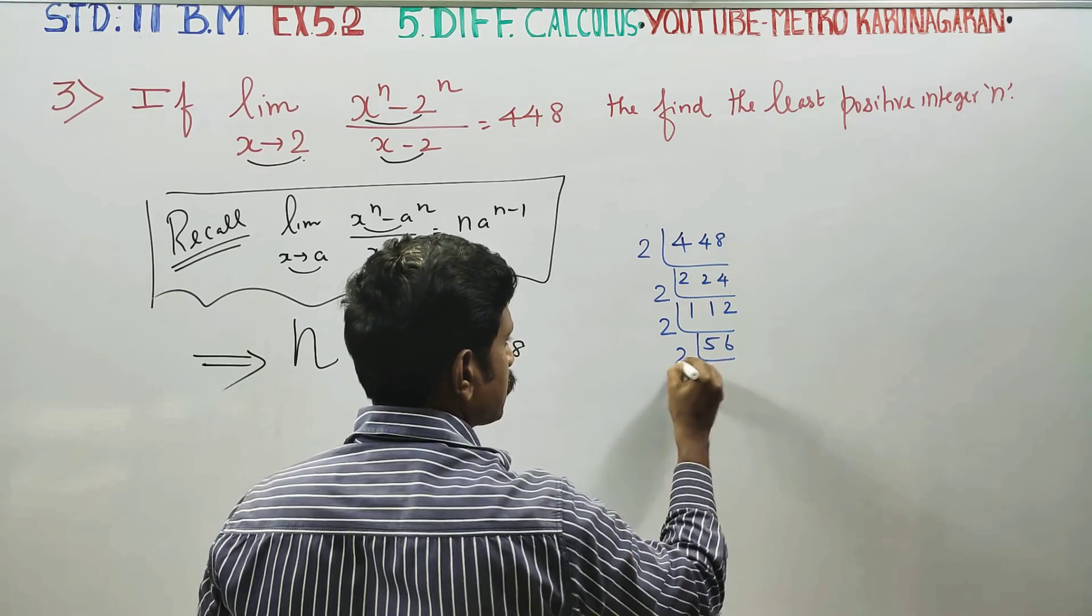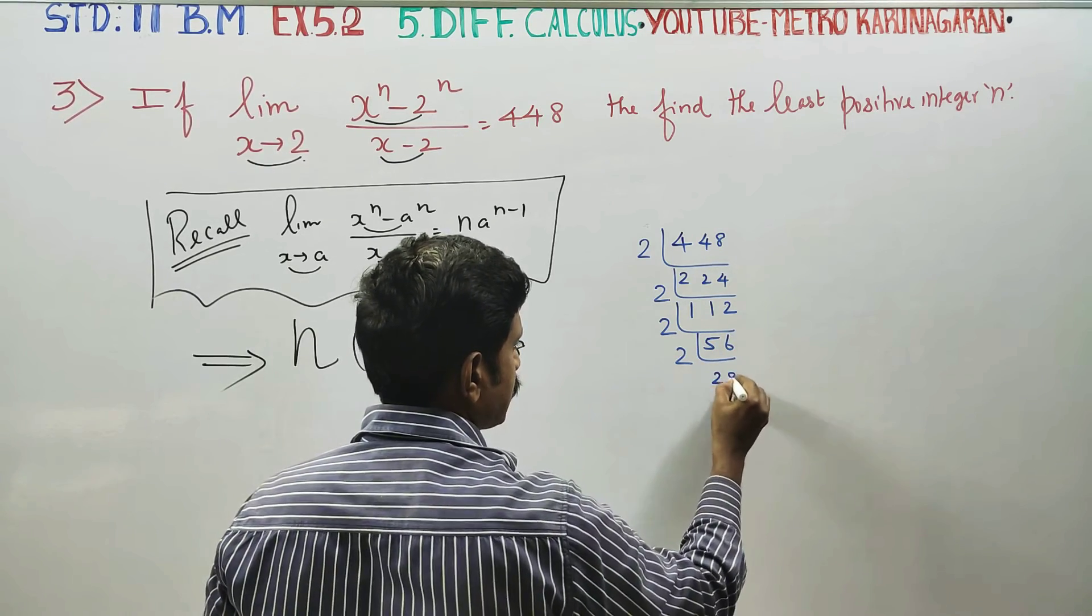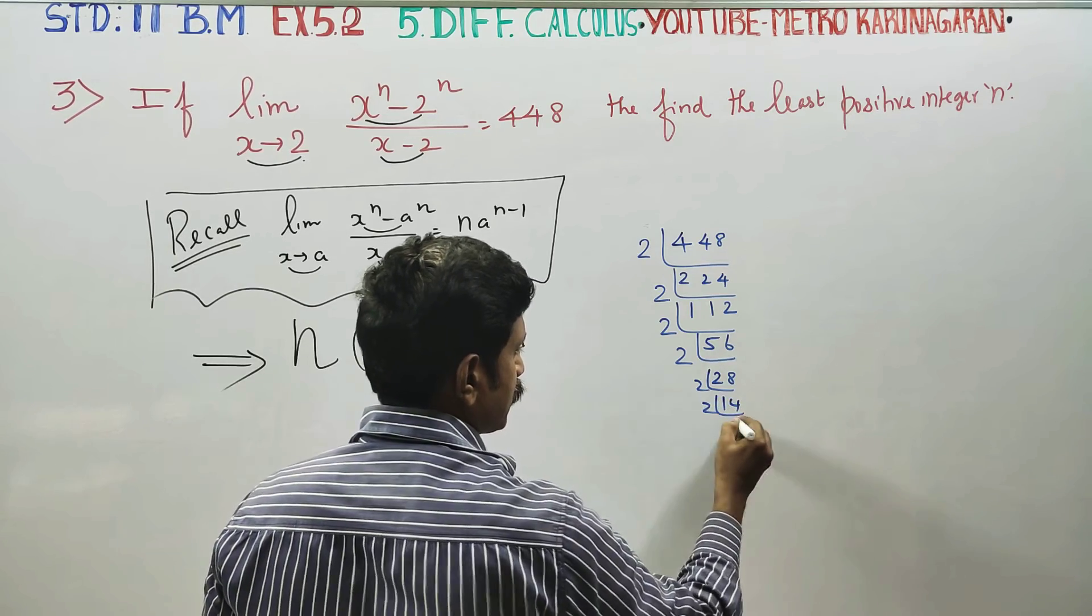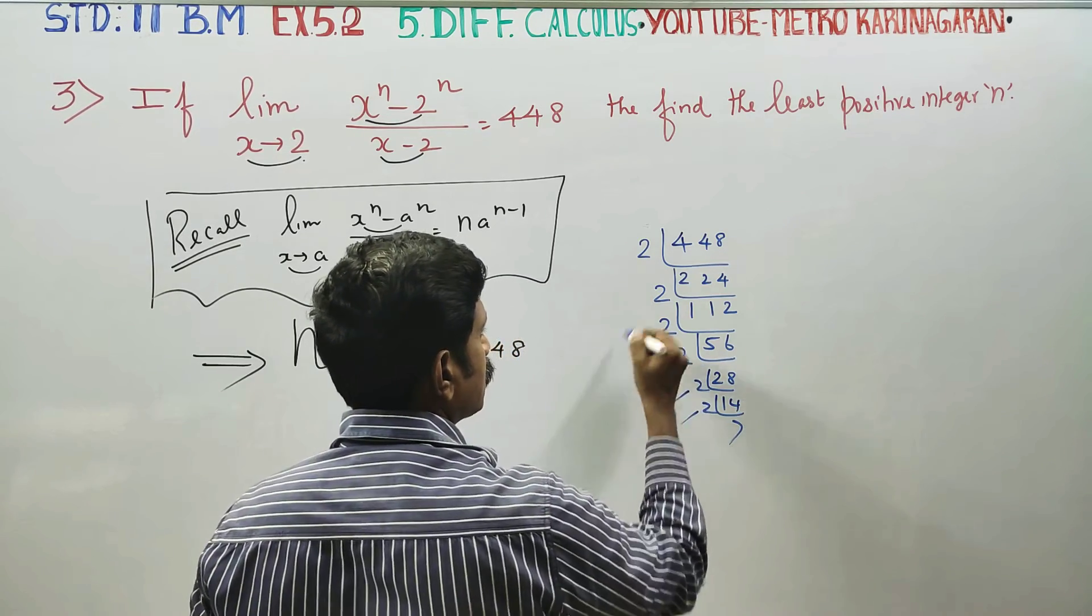28 divided by 2 is 14, divided by 2 is 7, and 7 is our final factor. So we have 2 raised to 6 times 7, which equals 448.